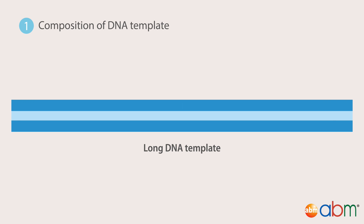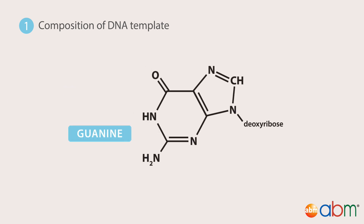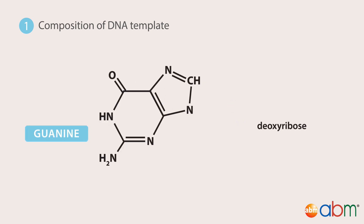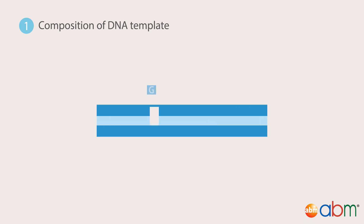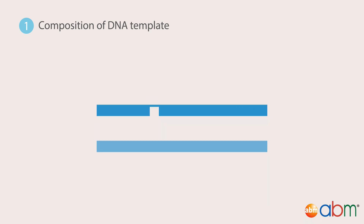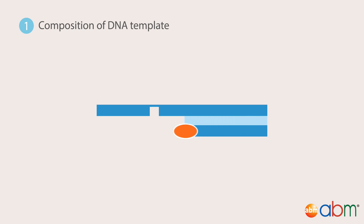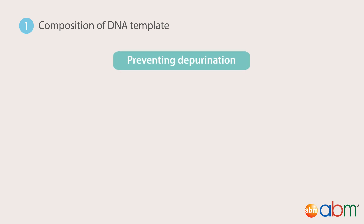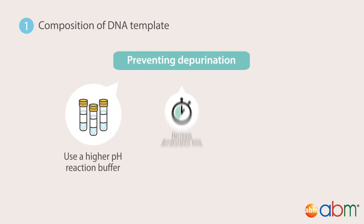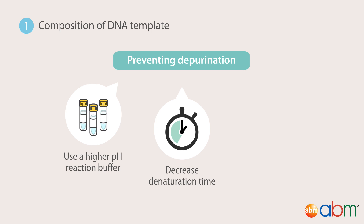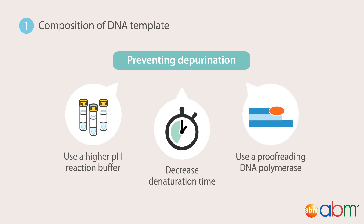Long templates are difficult to amplify because of their higher likelihood of DNA template being broken or degraded by depurination. Depurination refers to a chemical reaction during which the beta-N glycosidic bond in the purine nucleoside is cleaved to release a nucleotide base due to hydrolysis. As Taq DNA polymerase will not extend through apurinic positions during replication, depurination is an important limiting factor of long template amplification. This can be avoided by using a higher pH reaction buffer and decreasing the denaturation time, or by using a proofreading DNA polymerase.